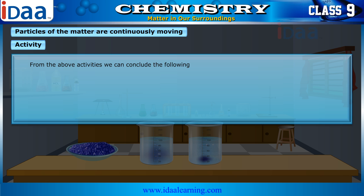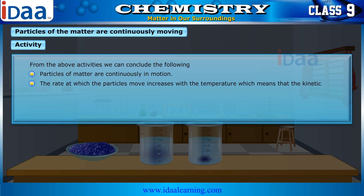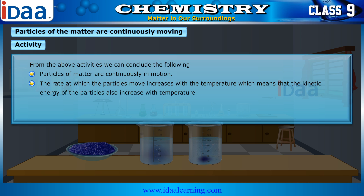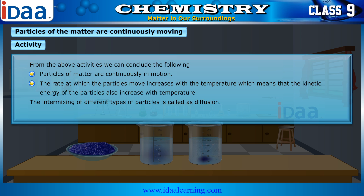From the above activities, we can conclude the following: Particles of matter are continuously in motion. The rate at which the particles move increases with temperature, which means that the kinetic energy of the particles also increases with temperature. The intermixing of different types of particles is called diffusion. The rate at which diffusion occurs is also dependent on temperature.